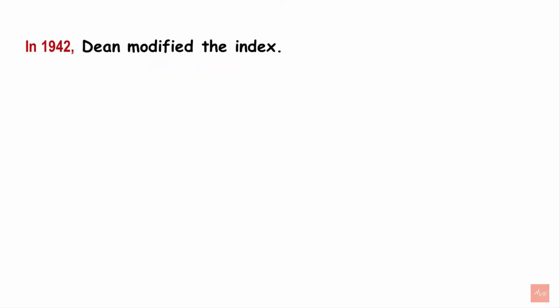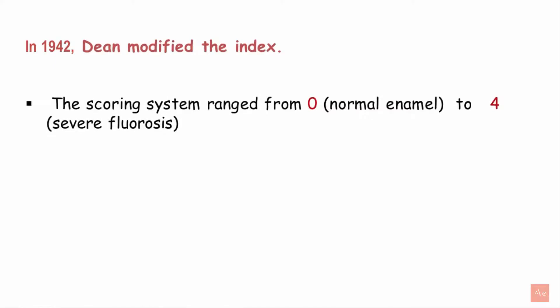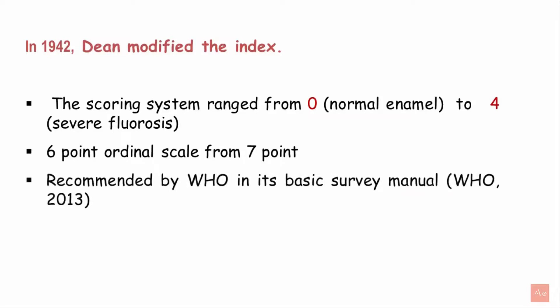In 1942, Dean modified the index and the moderately severe category of scoring was removed. The scoring system now ranged from 0, depicting normal enamel, to 4, depicting severe fluorosis. The 1934 index had seven categories whereas the modified Dean index had a six-point ordinal scale. This modified index was also recommended by the WHO in its basic survey manual.